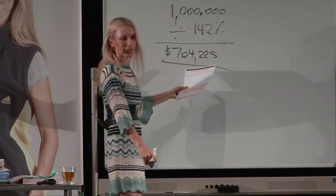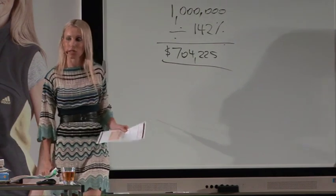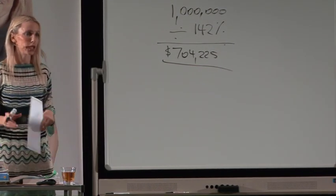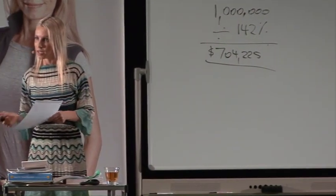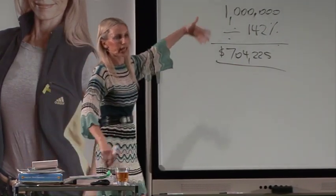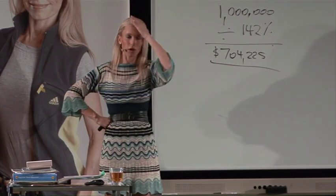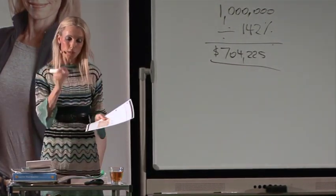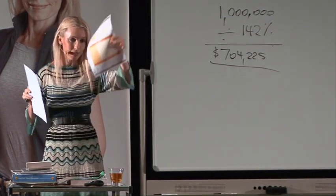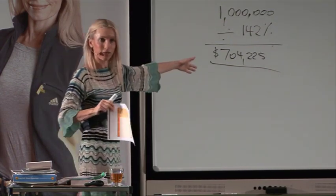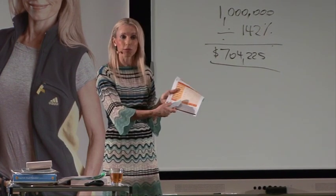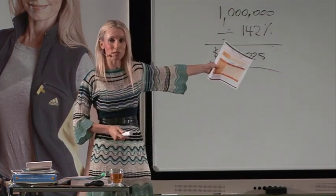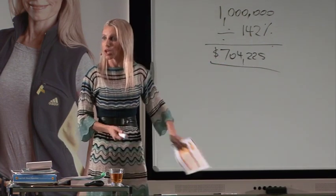If the agent has the property on the market for $800,000, it's about $100,000 overpriced. That's where you negotiate — you say the property is only stacking up at $700,000 based on my financial feasibility, and the most I can afford to pay is $704,000. Instead of just plucking figures out of the air, you're using your feasibility language. Don't be scared to show agents your templates and justify your rationale — it gets you taken more seriously.